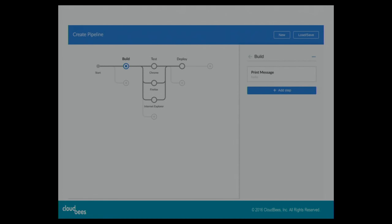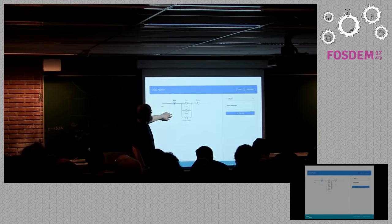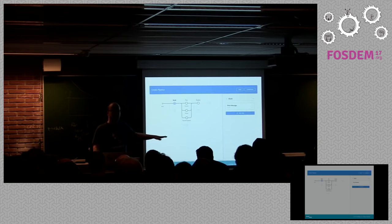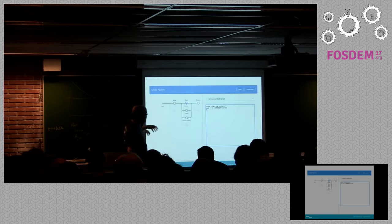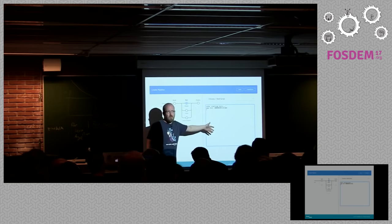It's a visual editor where you can specify your stages and specify parallel execution by clicking a plus button. For example, in a test stage you can see Chrome, Firefox, and Internet Explorer running in parallel, and then a deploy stage after that. The basic graph looks almost identical to what you see in the Blue Ocean run visualization — not a surprise, it's part of the Blue Ocean UI theme.